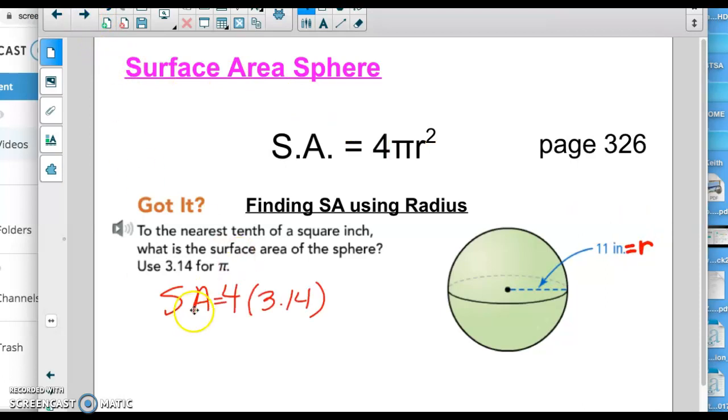So we start plugging in the numbers. Surface area equals 4 times 3.14, there's our π, times 11 squared since we know 11 is our radius and we just type that whole thing into our calculator and we get 1519.8 inches squared.